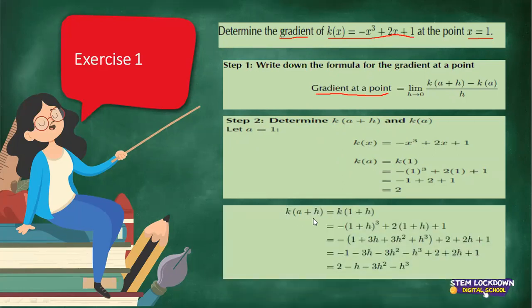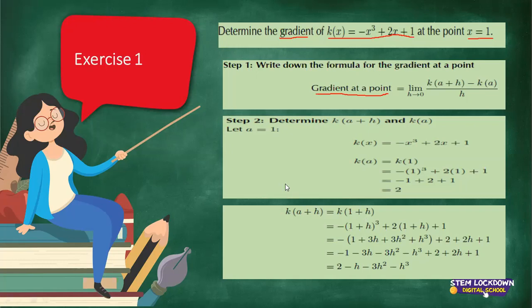You can start with either k(a+h) or k(a) — it doesn't matter, it depends on what you want to start with. You can also start by saying k(x+h) and then solve, substituting 1 at the end. There's no single method for solving the problem — as long as it's mathematically correct.